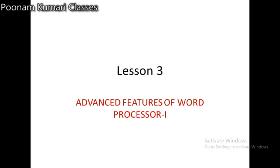So students, all of you open your book, page number 30, lesson number 3, Advanced Features of Word Processor 1. In this chapter we will learn about: Format Painter, applying superscript, subscript and shadow effects, applying header and footer, inserting column and column break, inserting page break and line break, setting margins and page orientation, setting paper size, and working with tabs and indenting text.